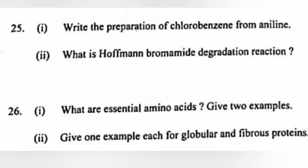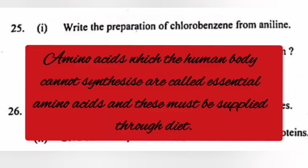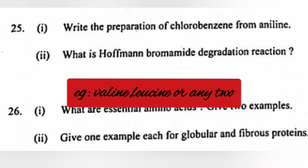Question 26, Part 1: What are essential amino acids? Give two examples. Answer: Amino acids which the human body cannot synthesize are called essential amino acids and these must be supplied through diet. Example: Valine, leucine, or any two.